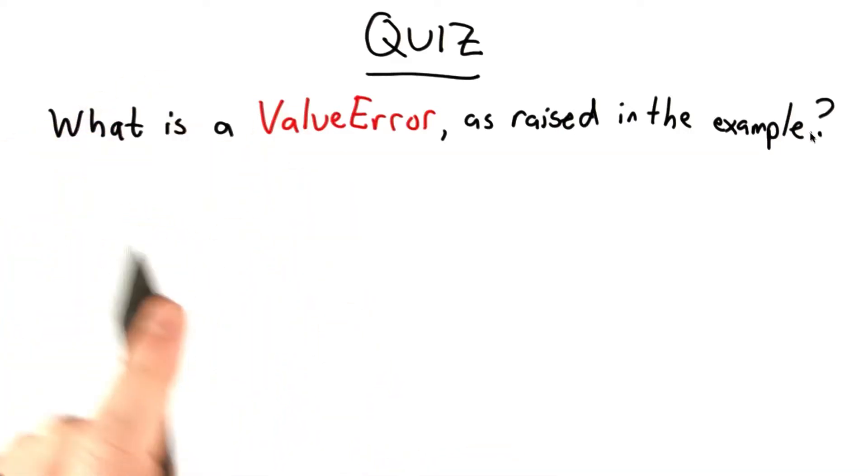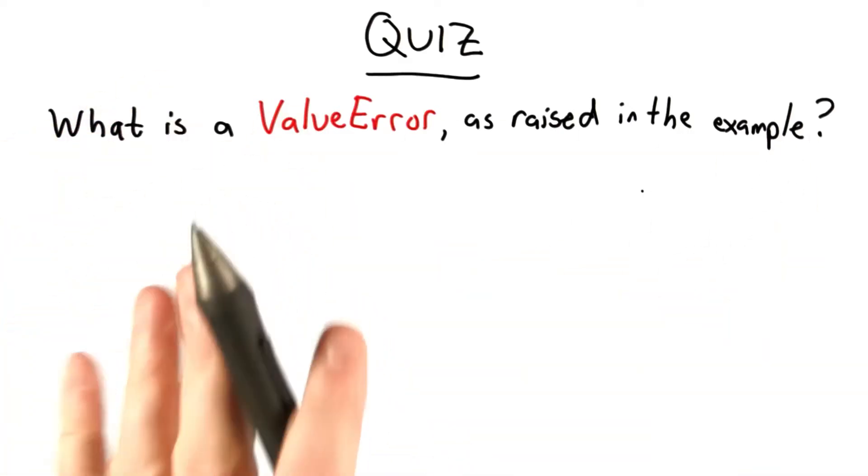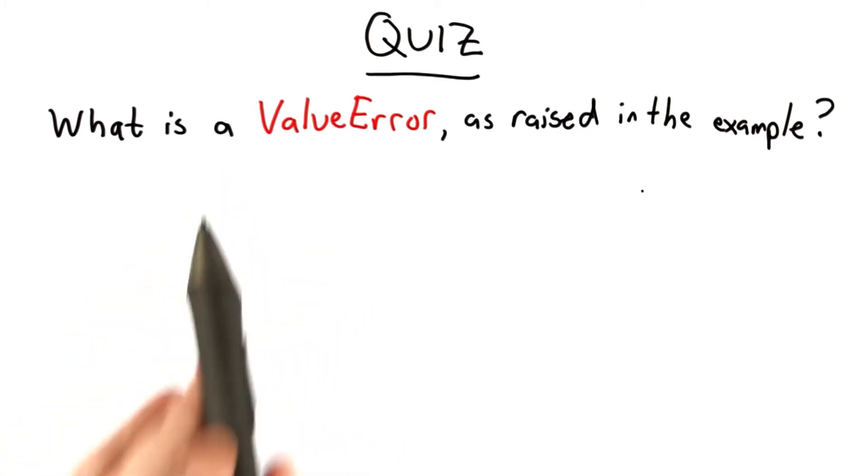So if you're really thinking like a Pythonista, I think you'll be able to answer this quiz even though I haven't explained it yet. So what do you think a ValueError is, as was raised in this example?